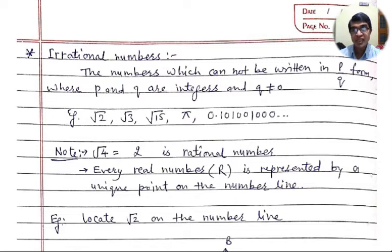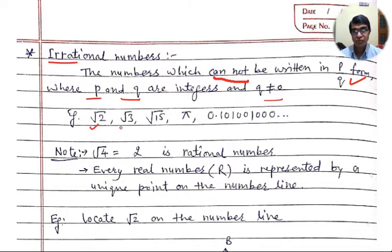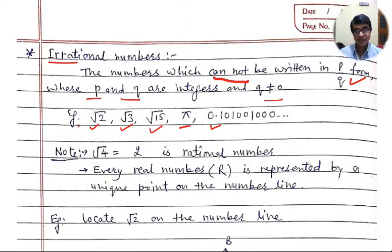Irrational numbers are the numbers which we cannot write in the form of P by Q. That means the numbers which cannot be written in the form of P by Q are irrational numbers, where P and Q are integers and Q is not equal to 0. Some examples of irrational numbers are root 2, root 3, root 15, pi, and the decimal number 0.10100100000... So let's discuss it.